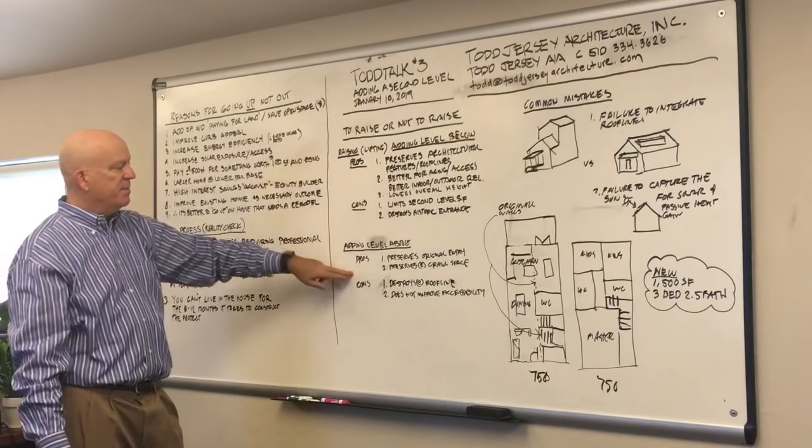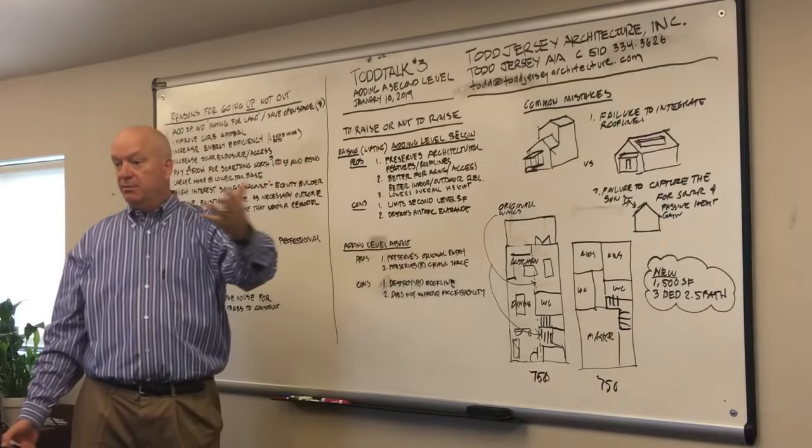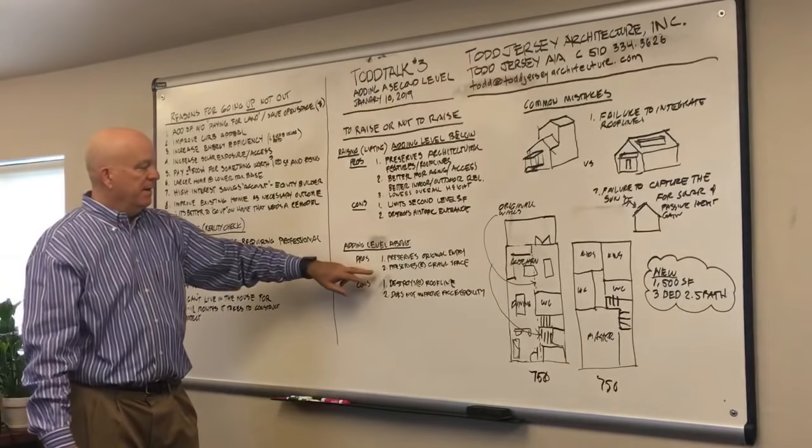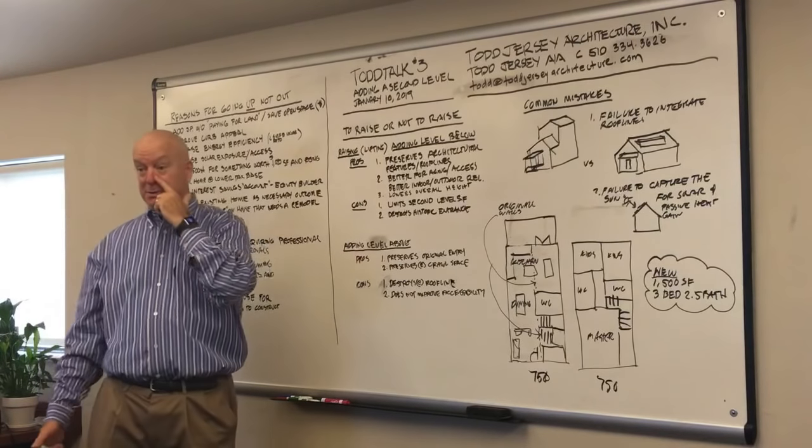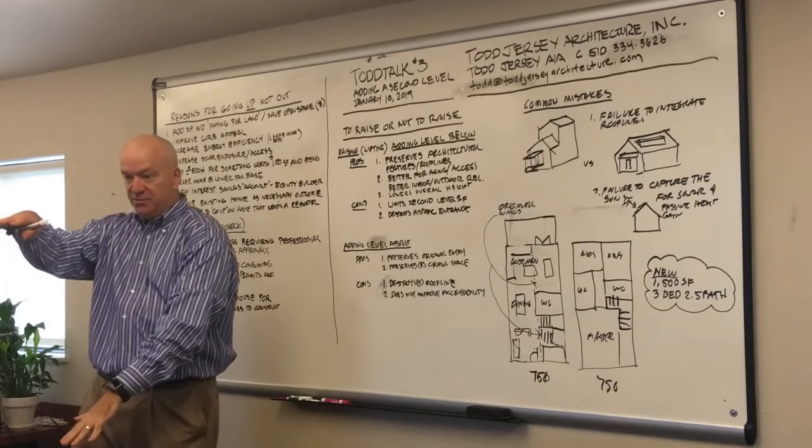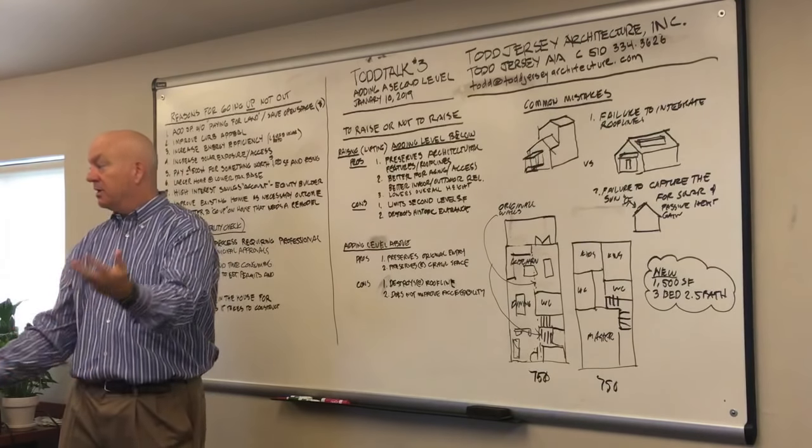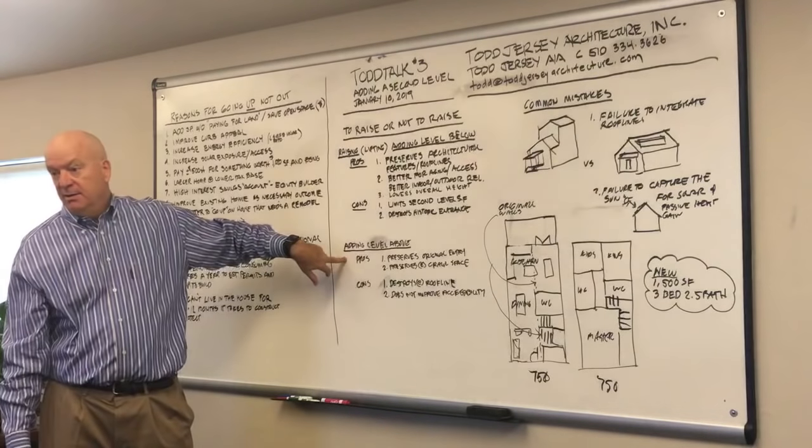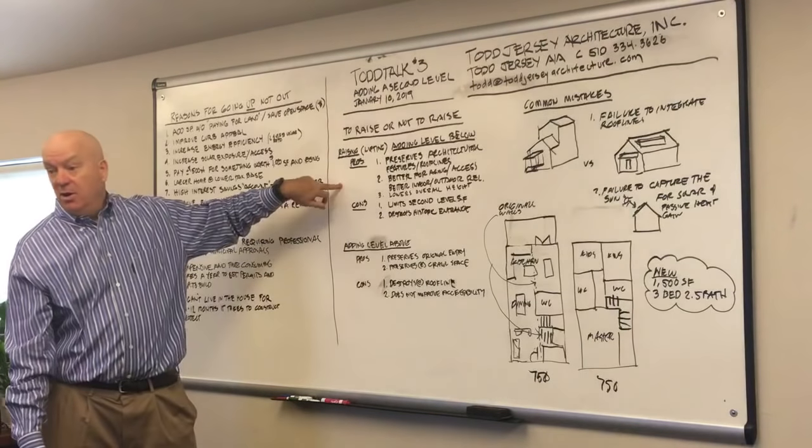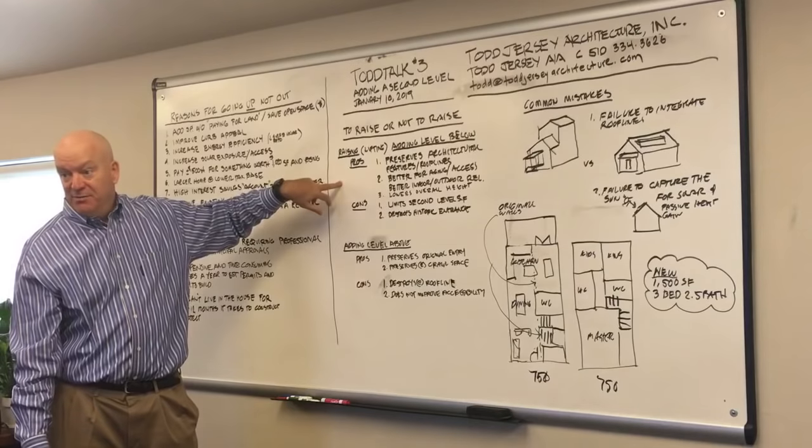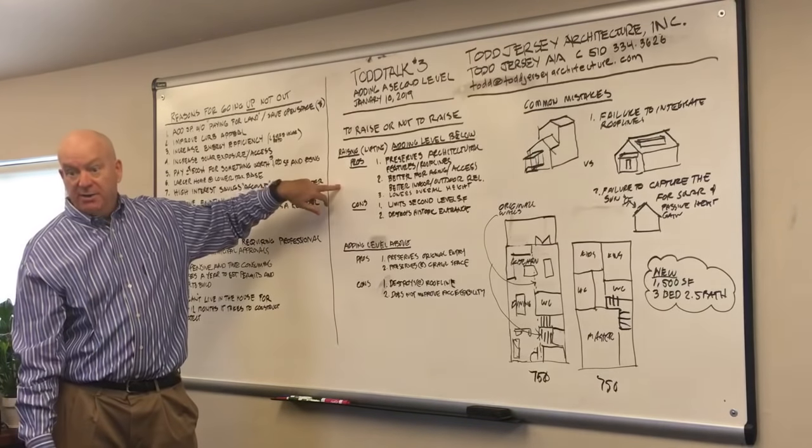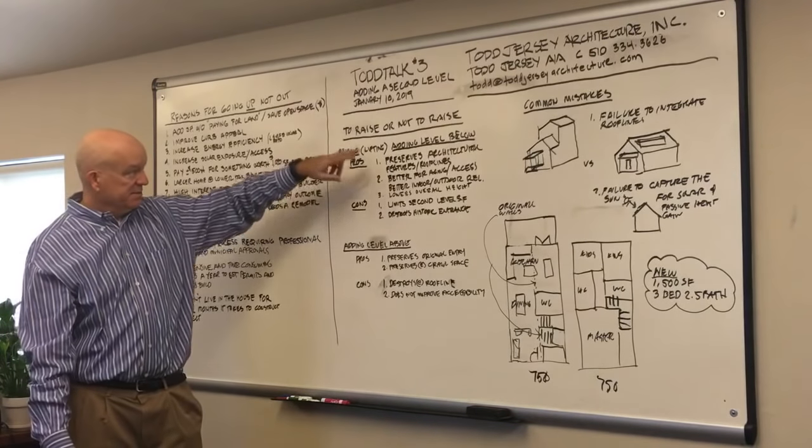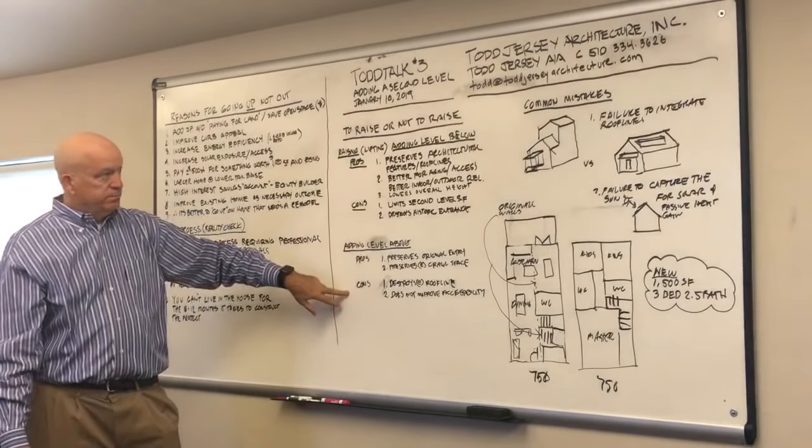Pros and cons of adding above. The pros is you're preserving your original entry. And you're preserving crawl space, which is that space under your first floor part where a lot of your mechanical and electrical and utilities. It's going to be a little less expensive to add than it is because you're redoing all of your wiring and your mechanical systems on the ground level.